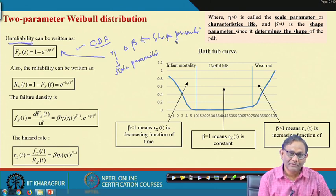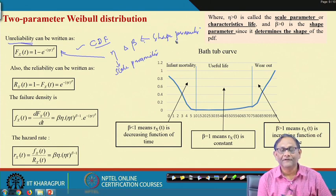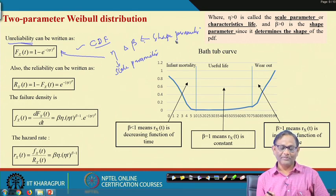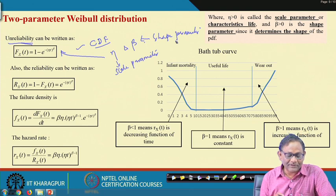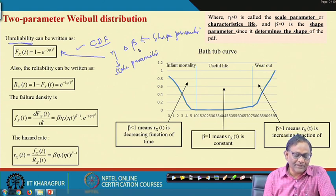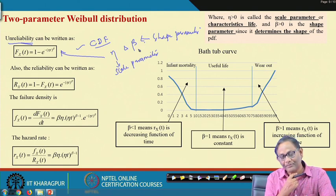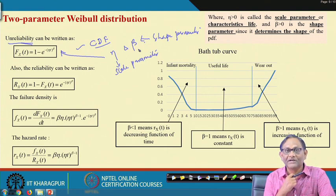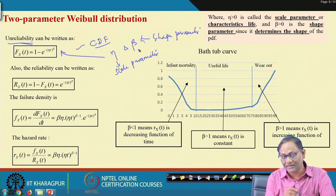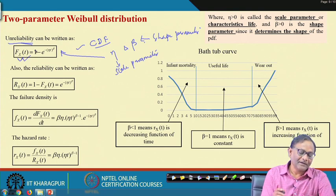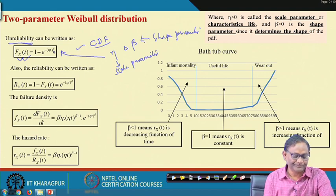If a component or system's failure follows Weibull distribution, and we have n identical components with the same eta and beta parameters, then the fundamental approach is: place n identical components under test, find the number of items surviving after certain time intervals, and from that experimental data you can develop the distribution. Later we will see how eta and beta can be estimated using the graphical method.